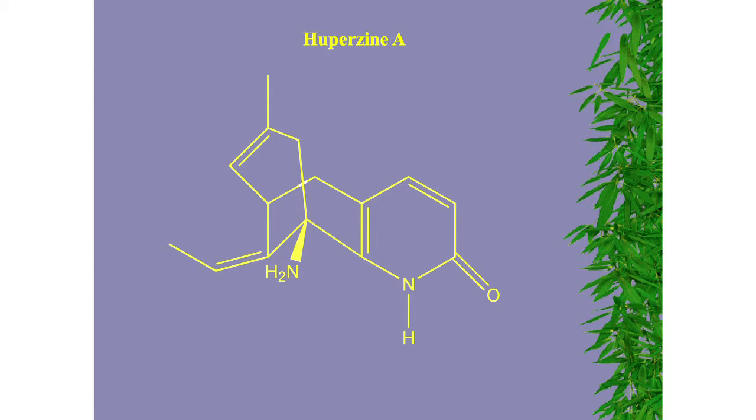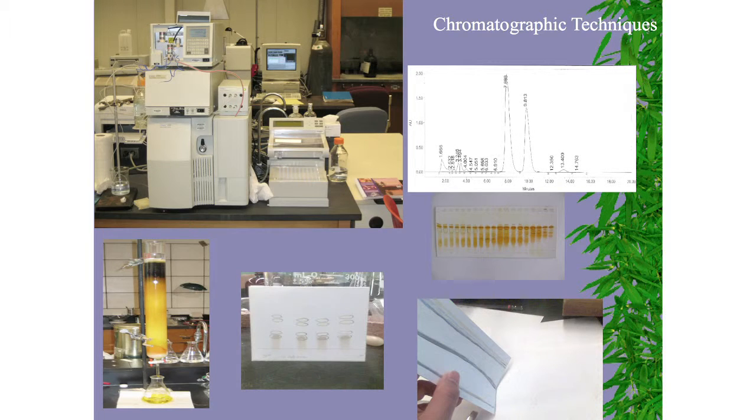These are the equipment you need to isolate different compounds. For example, HPLC — when you inject the compound into high-performance liquid chromatography, you get peaks and collect them to obtain a pure compound. Column chromatography shows bands that sometimes represent pure compounds, sometimes mixtures. You can do TLC to confirm purity. You can also streak the TLC plate instead of spotting to get a band, which allows you to isolate pure compounds.